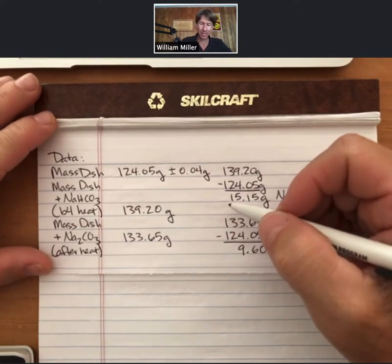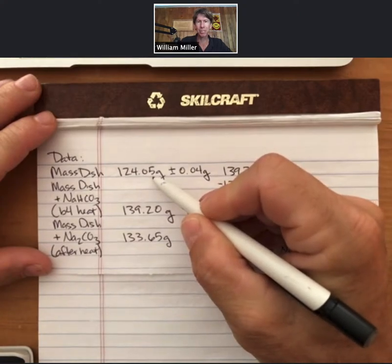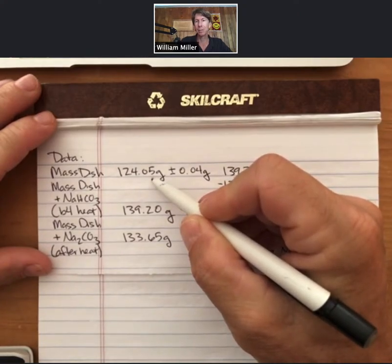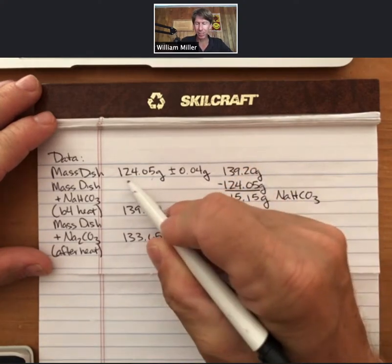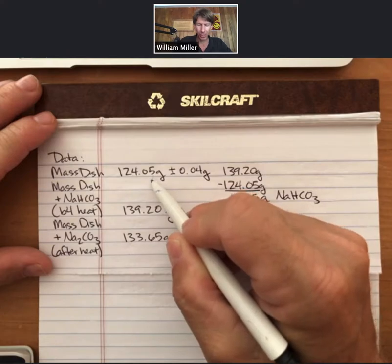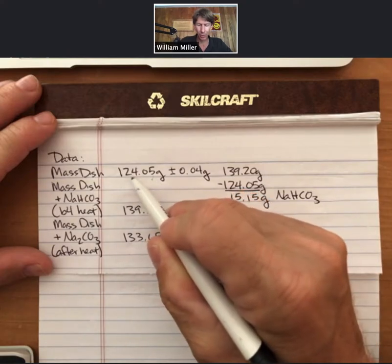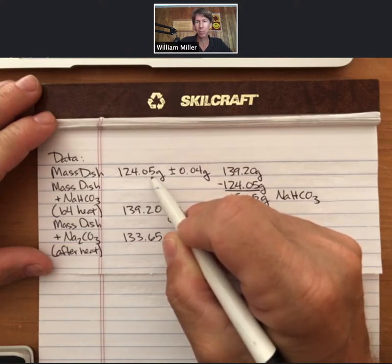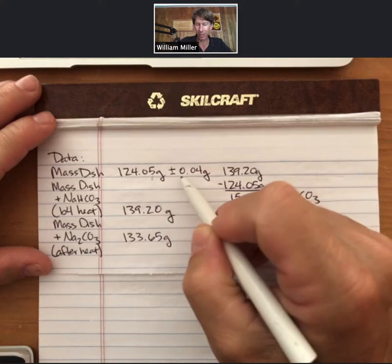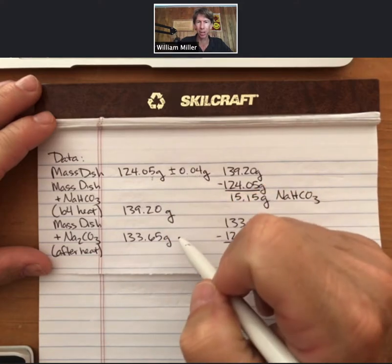This makes sense because the last digit, the hundredths place, there is some knowledge about what that last digit is, but some uncertainty as well. When we have five significant figures right here, we have 124.0, those we definitely know for sure, and we have a good idea or some information at least about this last digit, as reflected by plus or minus 0.04 grams.